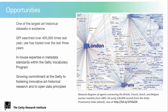Despite such challenges, we really feel there's immense potential in this resource. For one thing, because of its size and scale — it's one of the largest art historical data sets in existence. Despite all those challenges, it was searched over 400,000 times last year and its use has tripled in the last three years. Our in-house expertise in metadata standards with the Getty Vocabulary Program is another reason we feel well positioned to undertake this project, and it aligns with the growing commitment at the Getty to fostering innovative art historical research and open data principles.